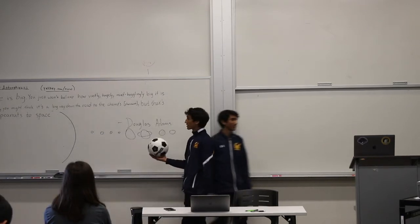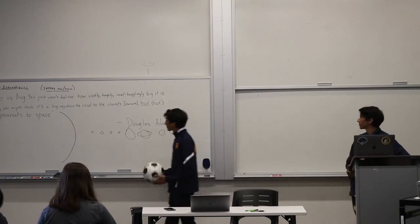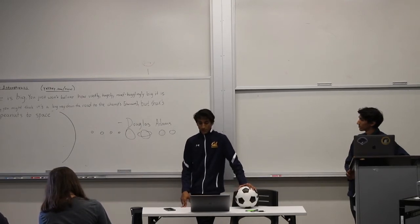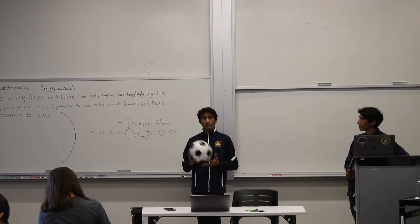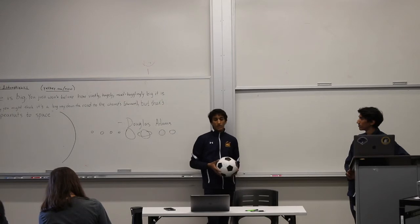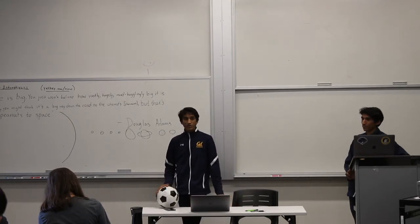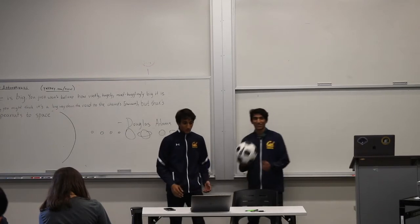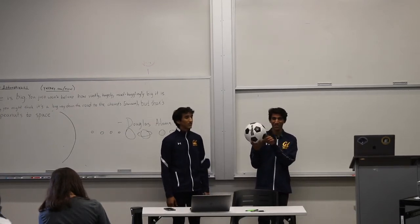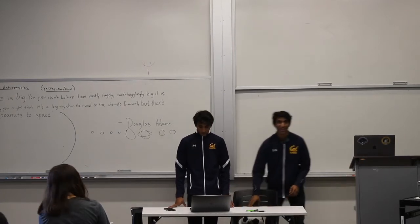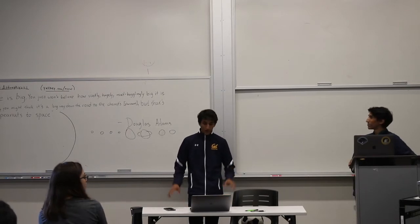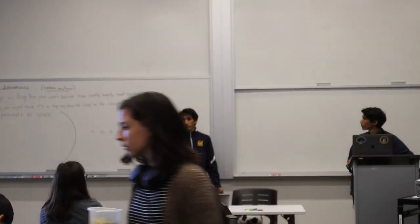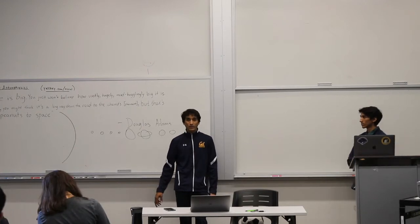Suffice it to say, stars are huge, and the Sun is just a middling, average star — not particularly exceptional in size. There are other stars that are even larger. In this model, if the Sun is somewhere near the Bay Bridge, you can see how kilometers quickly start to break down as a useful unit. There are 13,000 kilometers in the Earth alone, so imagine how many kilometers there are between here and the Sun. And that's only the start.